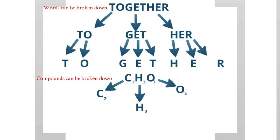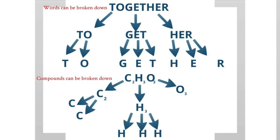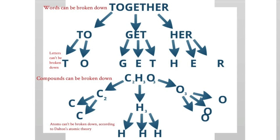The chemical compound is also broken down to its letters, and after that it can't be broken down any more. Letters are like atoms because, according to Dalton's atomic theory, atoms can't be broken down any more. So the C isn't going to be able to be broken down into anything else, in the same way that the T in 'together' can't be broken down into anything else.